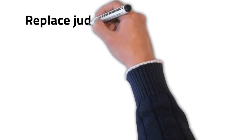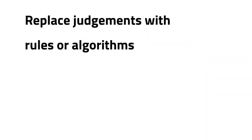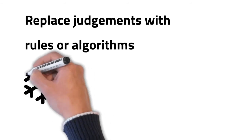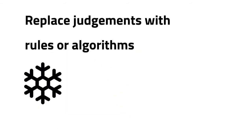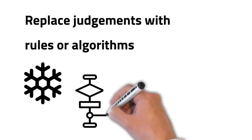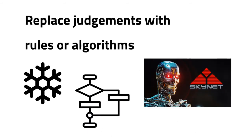A good decision hygiene can be given six steps to follow. The first one: replace judgments with rules or algorithms. Judgments should not be the place to express individuality if we want accuracy. Algorithms can also help, and it might be the only way to reduce noise completely. Tell that to Skynet.